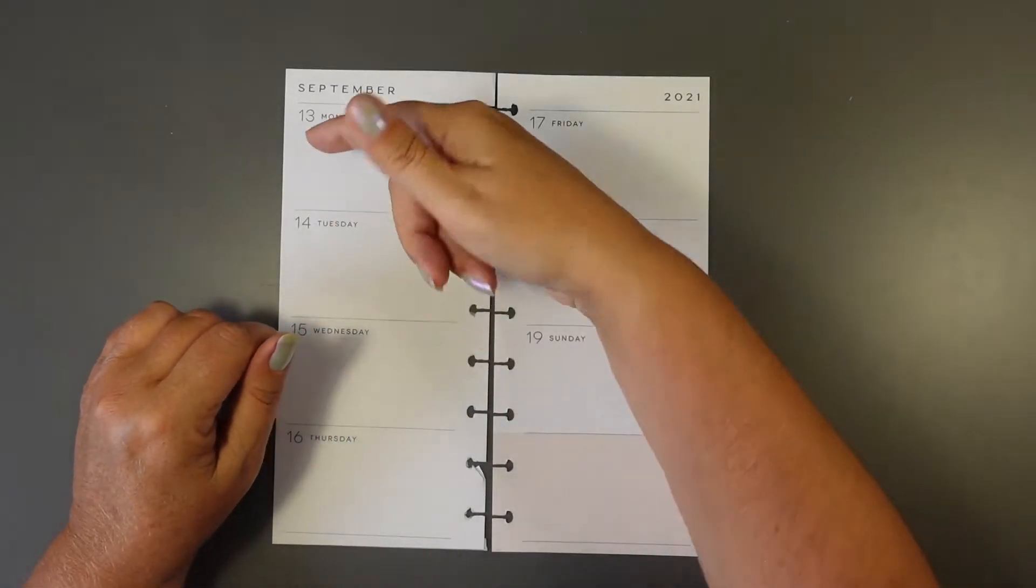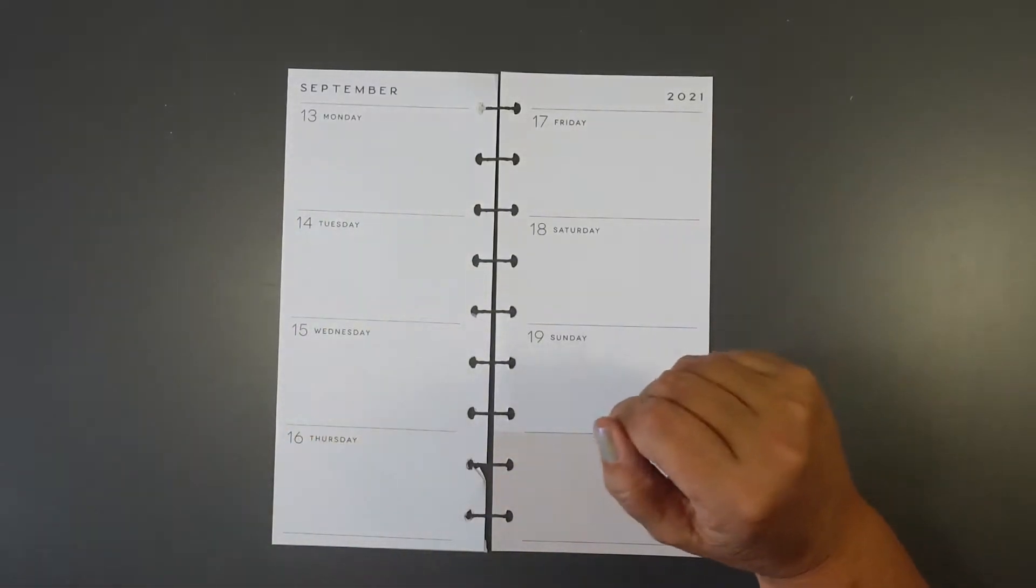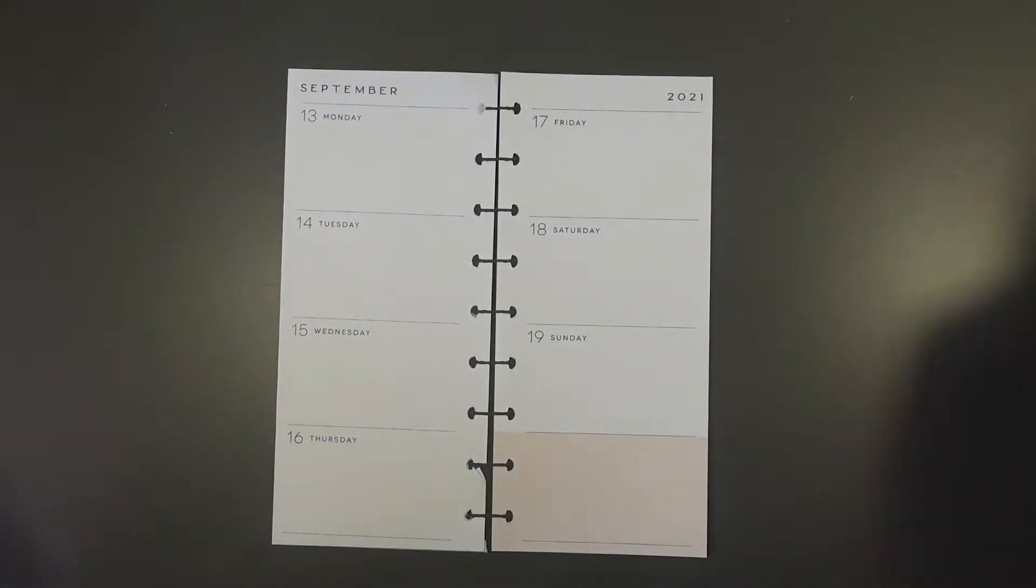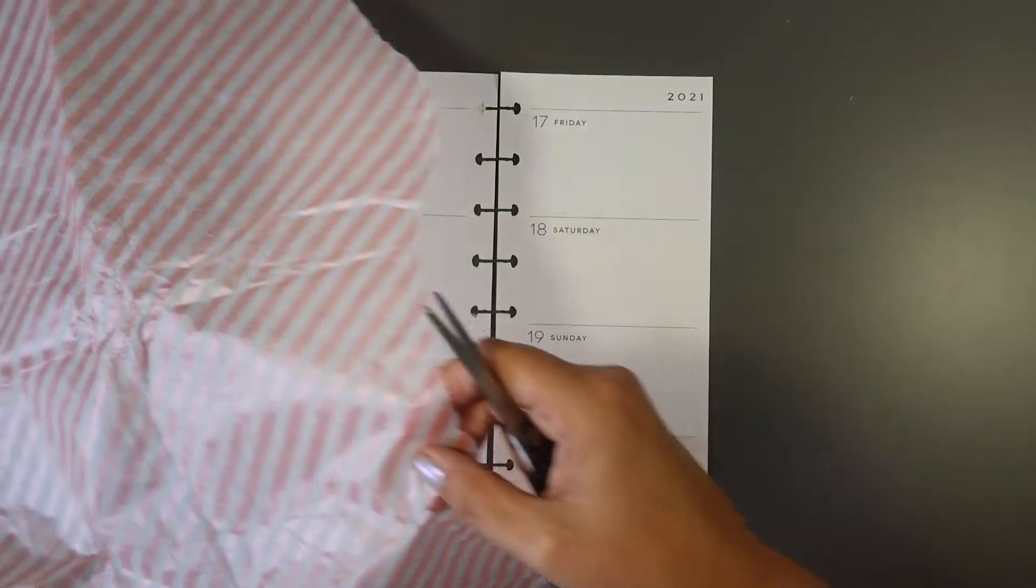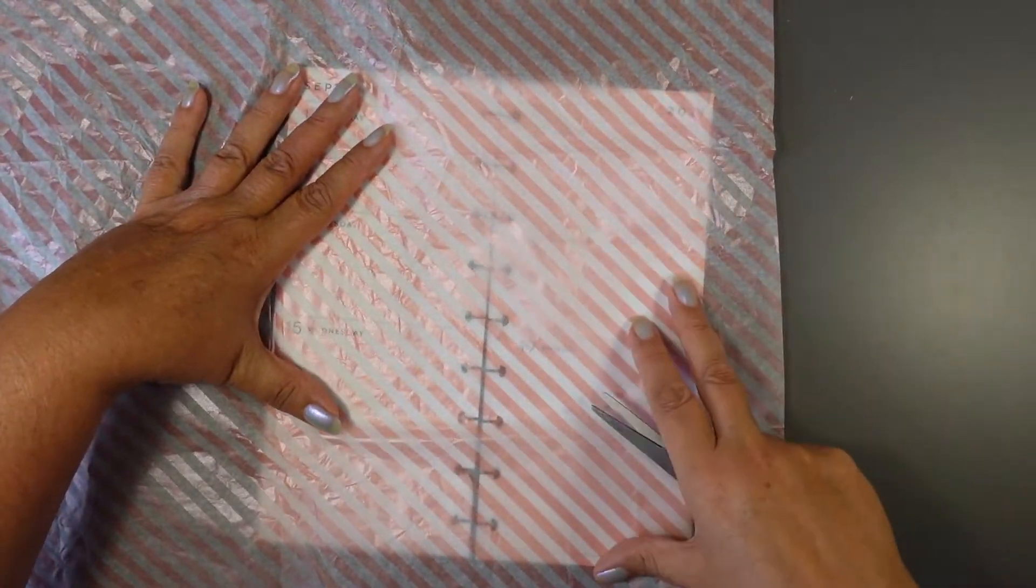Hi, this is Plan with Nyree and I'm decorating my skinny planner from the 13th to the 19th of September. I've got a different idea here. This is literally gift wrap that came with one of my orders from some of my planner stuff. I'm going to cover a whole lot of this and make it my background. So that's the first thing I'm going to do.